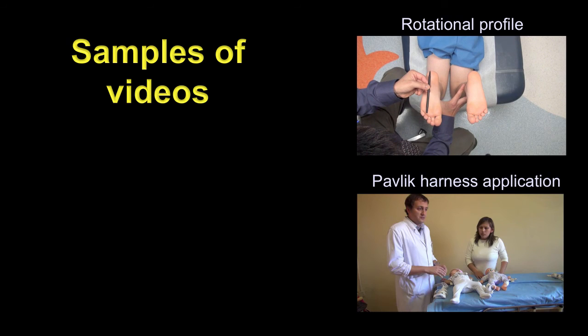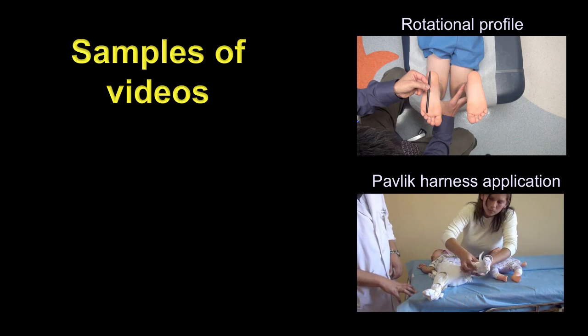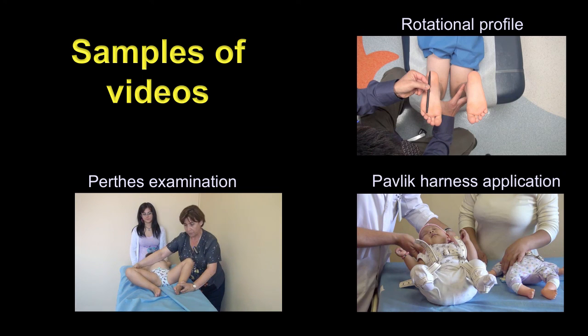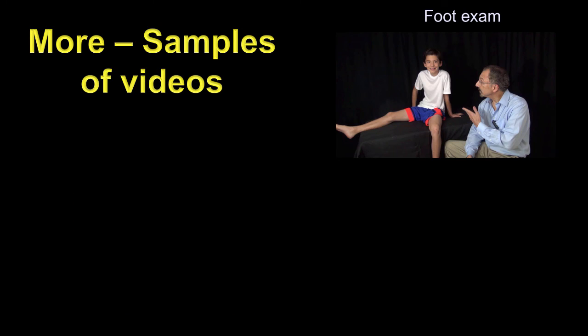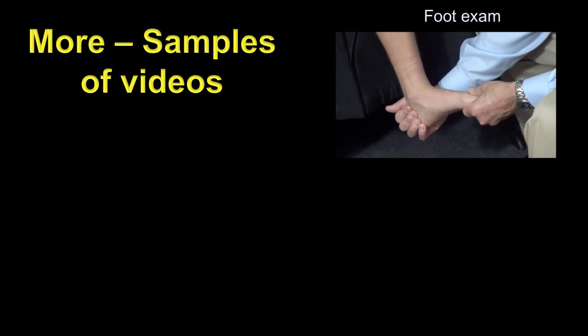We have some examples of what we've done already. For example, showing the development of the rotational profile, which is much better shown on a video than with a description in a PDF. Or how to apply a Pavlik harness for parent education — showing it on a video is so much more effective, and families can watch this themselves; it will be available on YouTube. Or the Perthes examination, showing the physical findings — on the left hip, you have limited abduction and also limited internal rotation.